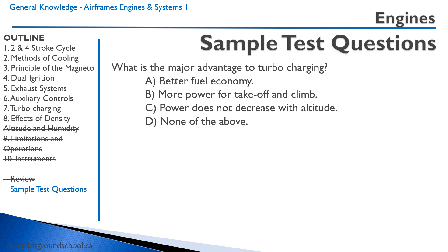Last question: what is the major advantage of turbocharging? A: better fuel economy — no, you actually burn more fuel with turbocharging. B: more power for takeoff and climb — yes, that is an advantage. C: power does not decrease with altitude. This comes down to the most correct answer — while a turbocharger does give more power for takeoff and climb, its biggest advantage is that you're able to maintain power all the way up to altitude. Correct answer: C. That concludes this lesson on aircraft engines. Thanks for joining me, and we'll see you in our next lesson.